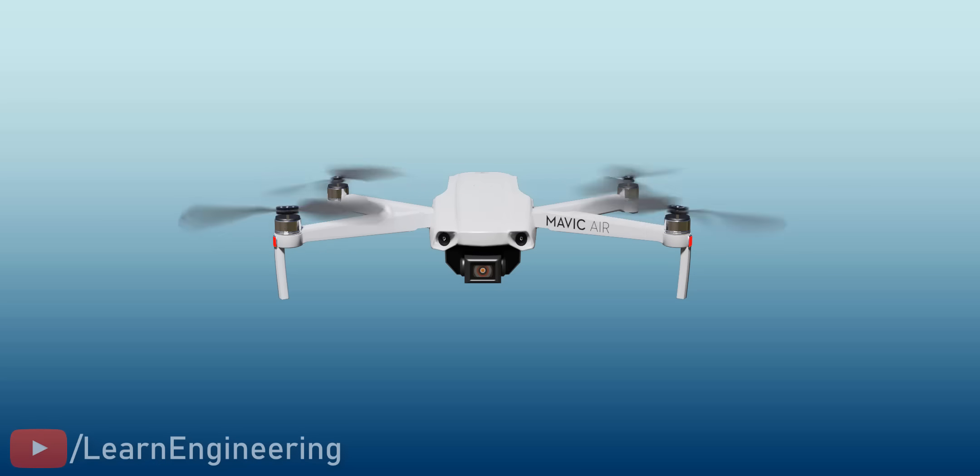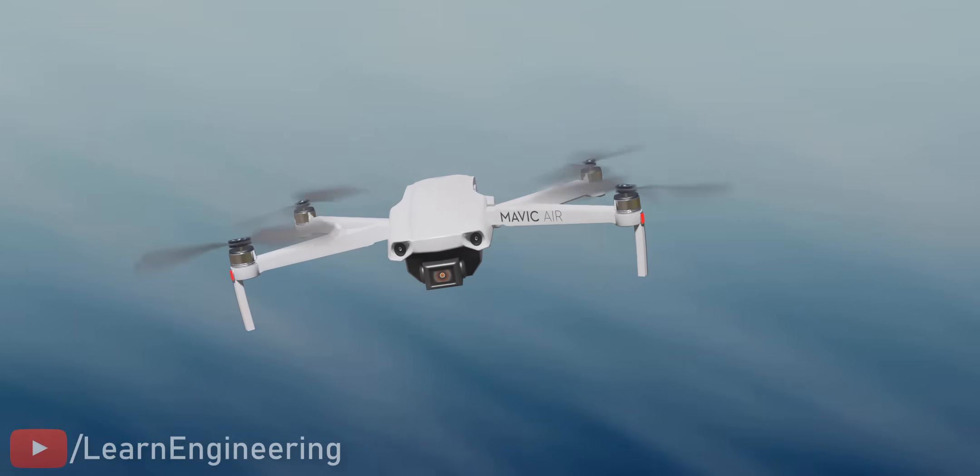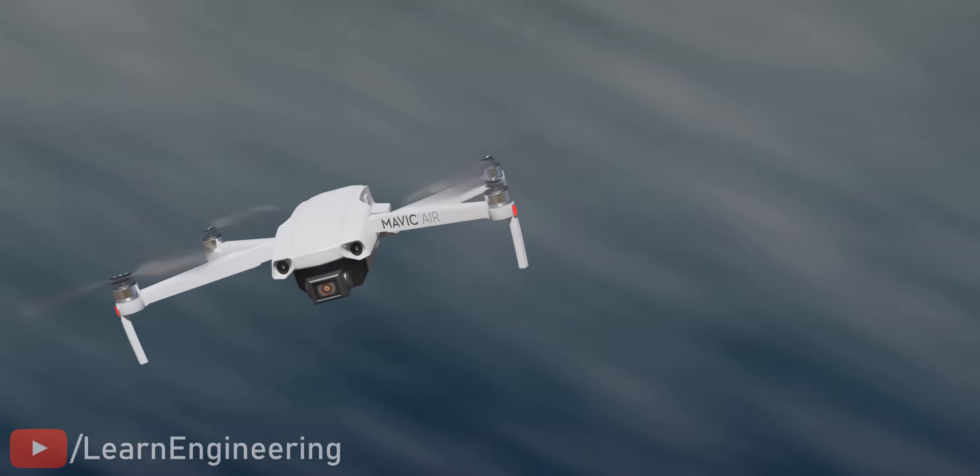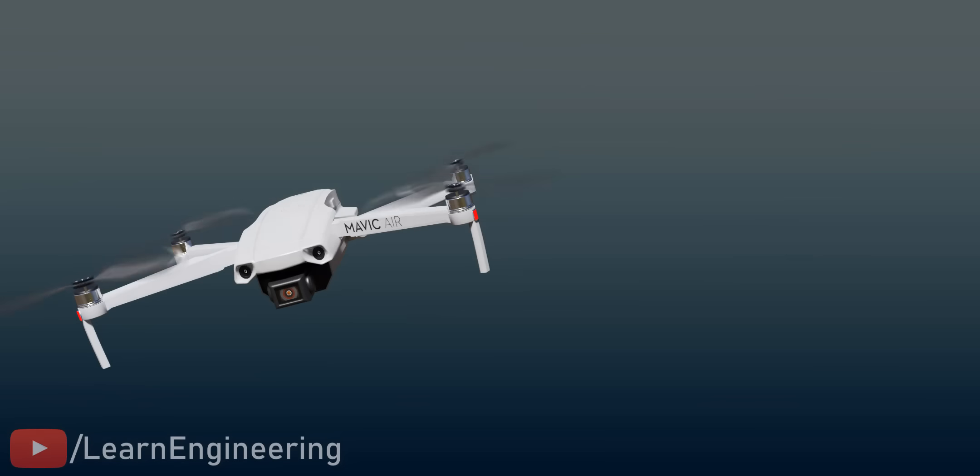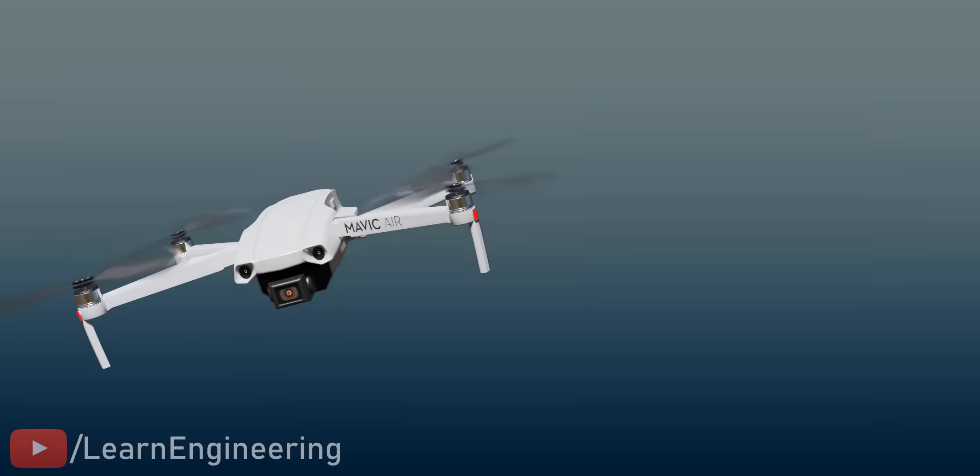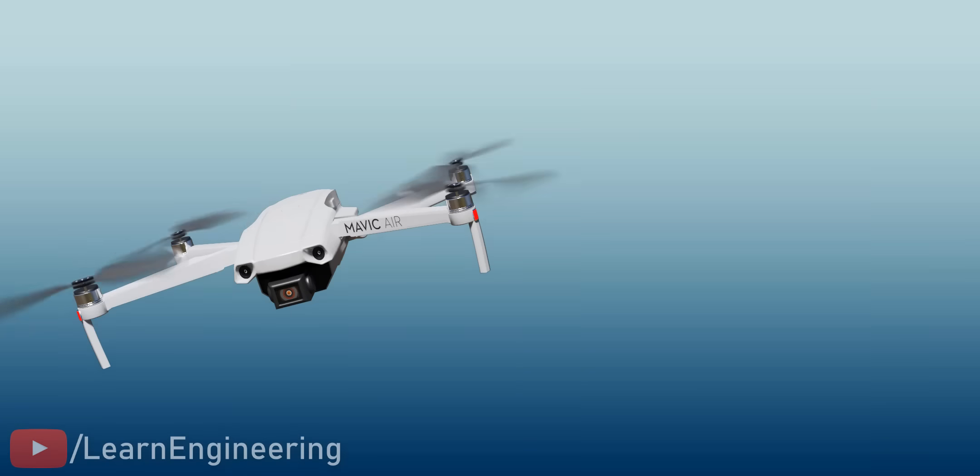This drone was hovering in the air, happily, when suddenly the wind blew and the drone tilted, as shown. The drone's smart controllers have to get the drone back to its normal angle, but the question is how? Let's freeze the scene at a particular time when the wind is blowing. Here, we're considering a change in just one angle for simplicity of analysis.